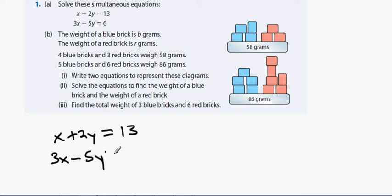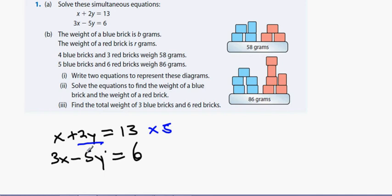The trick with simultaneous equations is to choose one letter to get rid of. I'm going to get rid of the y's because one is a plus y and one is a minus y. I pretend there's a window between the two equations — the top equation sees the number 5, so I multiply the top equation by 5, and the bottom equation sees the number 2, so I multiply by 2.